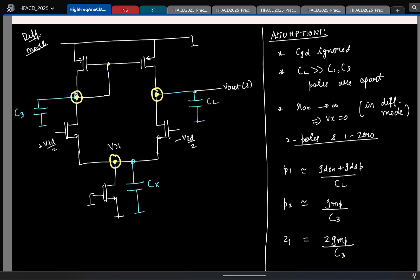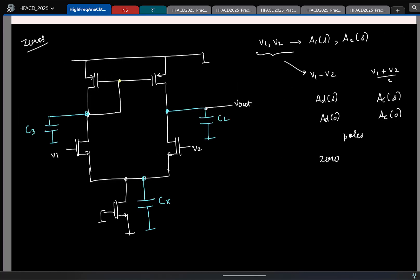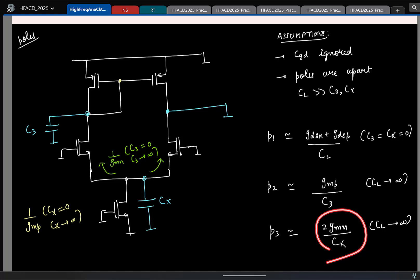No, they actually will be greater than the CX pole you are saying. That you can see this. As we saw, the pole location is what? 2 GMN by CX. And this will be the lowest frequency pole. So, this will be much higher. This will come higher, but whether it is greater than P2 or smaller than P2, that depends.